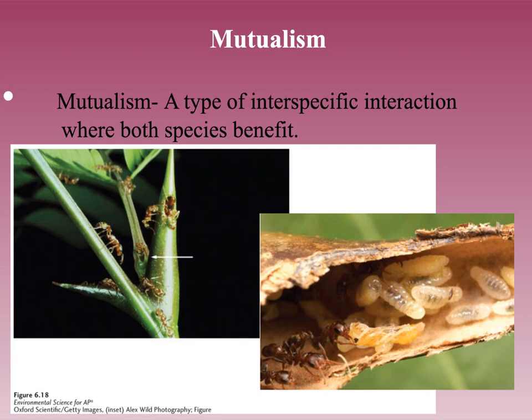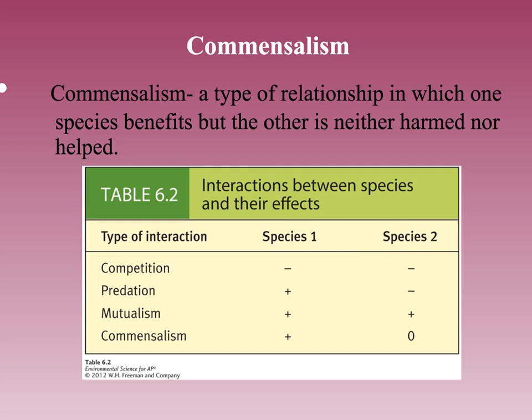Next we have mutualism — a type of interspecific interaction where both species benefit, like plants and the bees that pollinate them. The bees get something from the plants and the plants get pollinated — both are benefiting. Commensalism is a relationship in which one species benefits but the other is neither harmed nor helped, like a bird perching in a tree or a fish hiding in coral. We also have symbiotic relationships — two species that live in close association with each other.